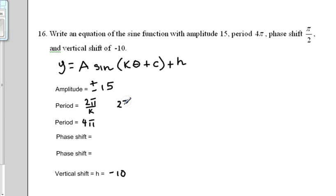So let's do that here. 2π over k equals 4π. We're going to write this 4π as a fraction, so we'll put it over 1. And we cross multiply, so what we'll get is 2π equals k times 4π.